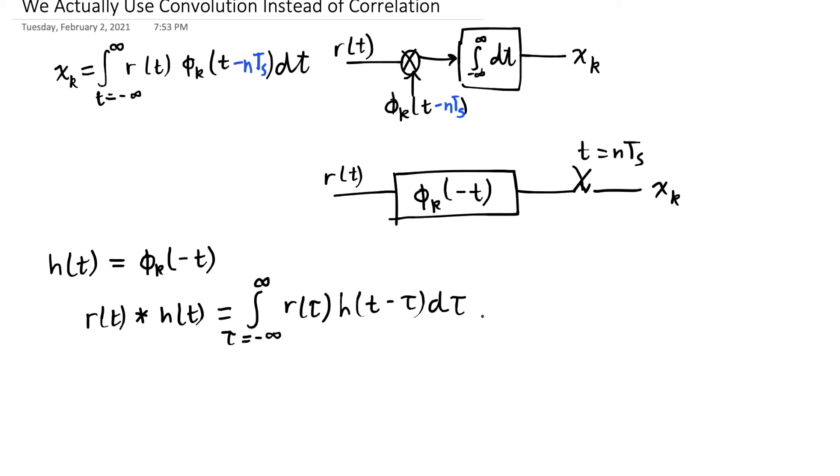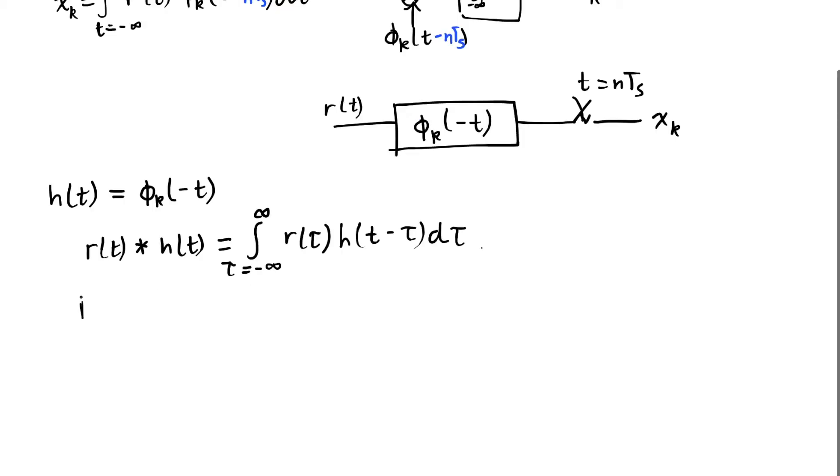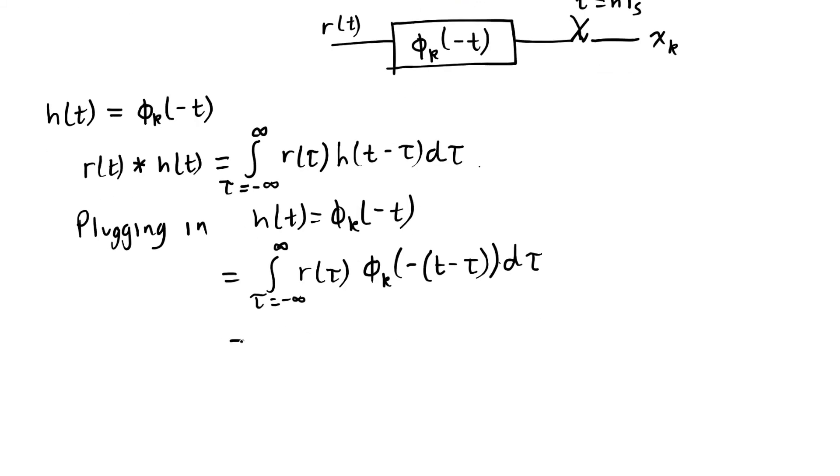Why does this end up being the same thing? Well, plugging in, I'm going to distribute the minus sign inside the argument of phi k. I'm going to get a plus tau minus t.